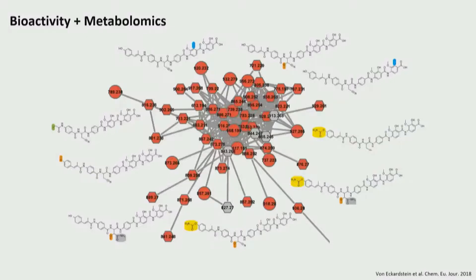I think this is really promising, but the challenge is that it does not really scale to the same size of samples we can run by non-targeted metabolomics. So what I find very tempting is: why not use the mass spec to directly assign functions to small molecules?